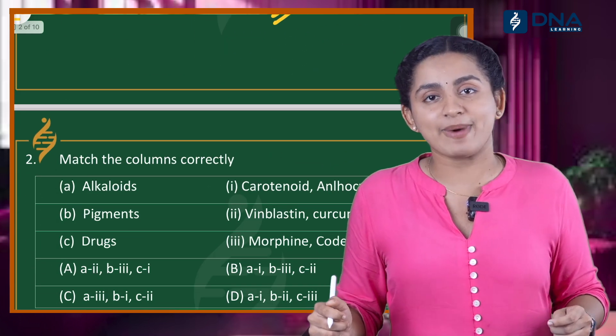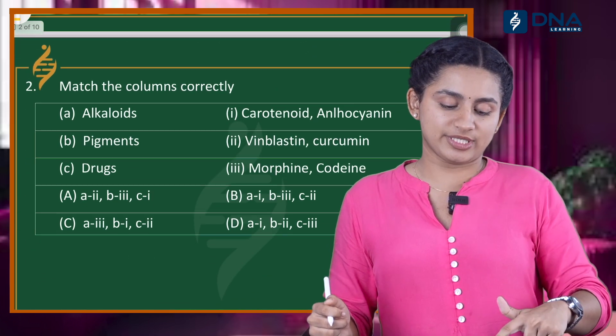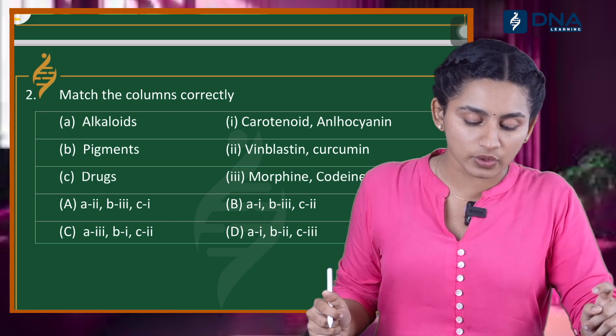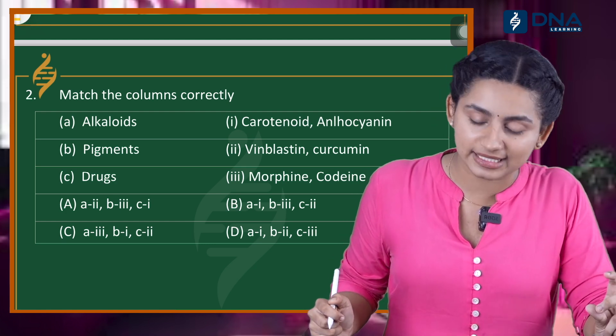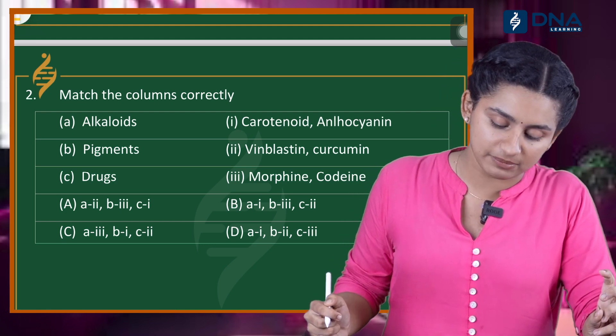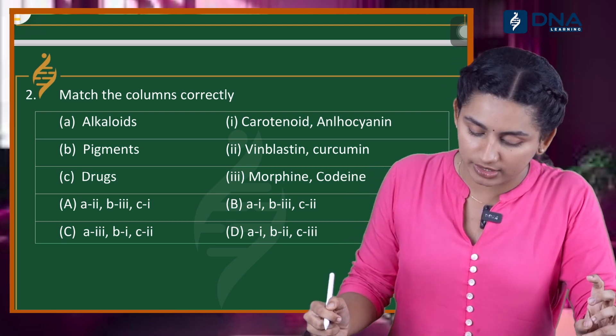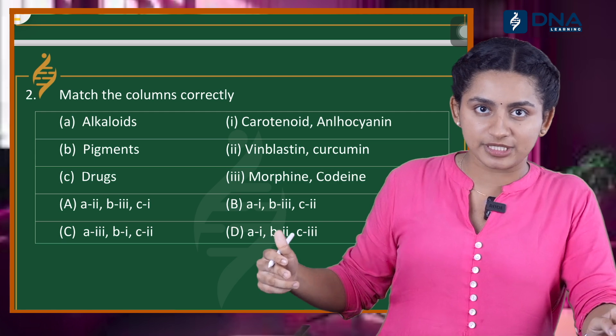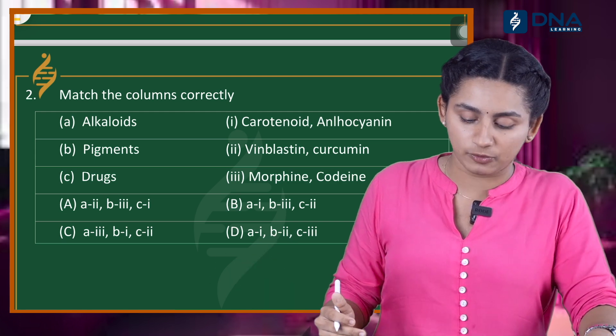Second question: it is a match-the-following question. We have 3 options. Option A, alkaloids. Option B, pigments. Option C, drugs. We will match the following.